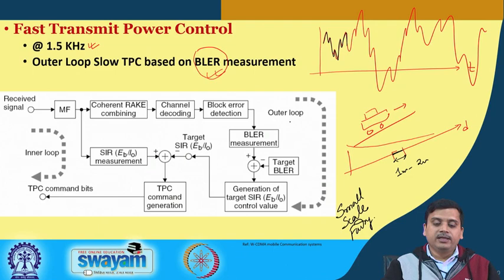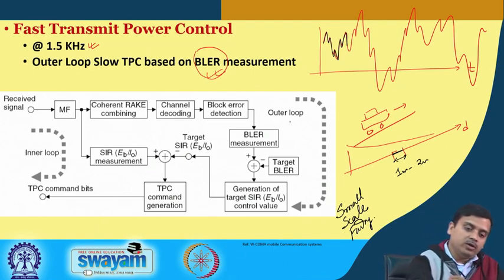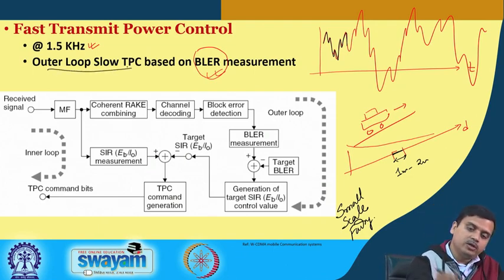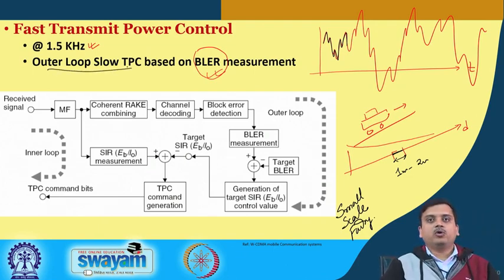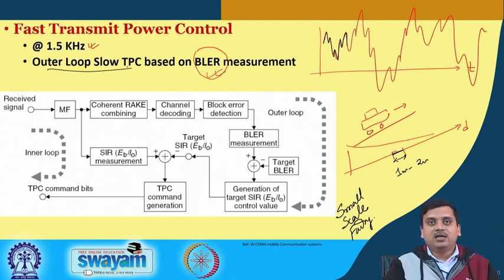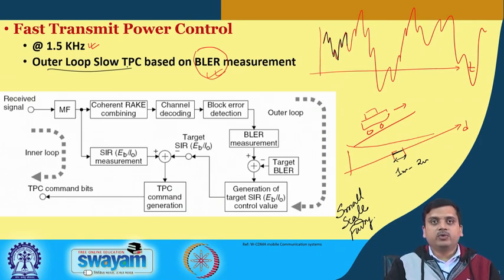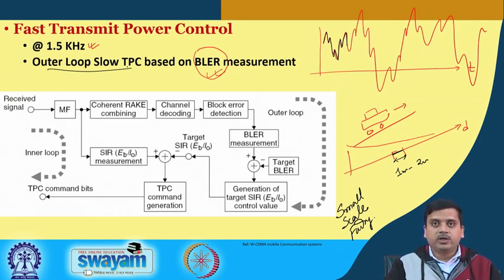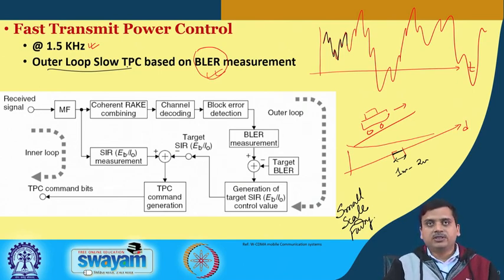The outer loop slow control also adjusts the SNR switching thresholds, based on which one can modify code rates, modulation order, and other link adaptations.